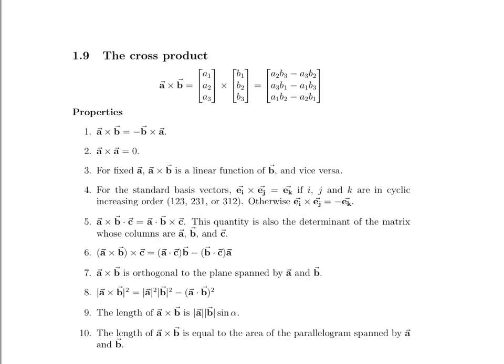Let's make sense of this formula. We have two vectors A and B, and here's the formula for the cross product. How do we calculate it? Let's look at the first component. The way to calculate it is to ignore the first row of the two vectors, and then pretend that you're looking at a matrix made up of the second two rows. We calculate its determinant, which is A2B3 minus A3B2, and that gives us the first component.